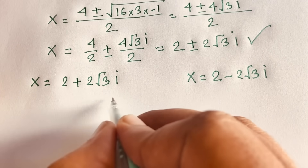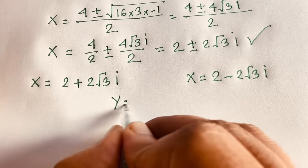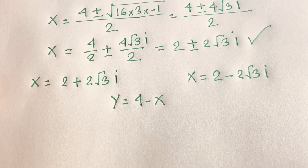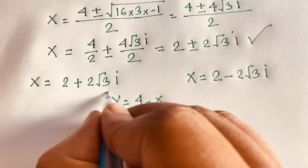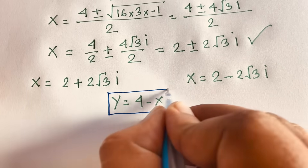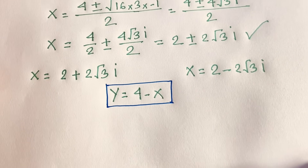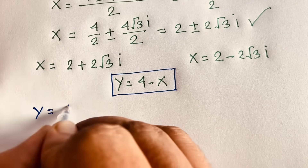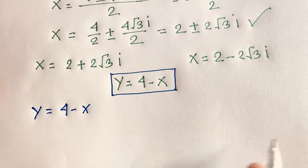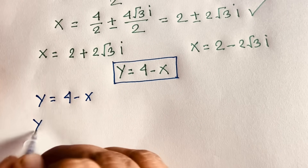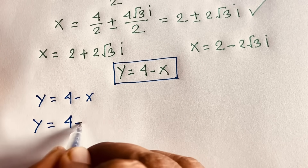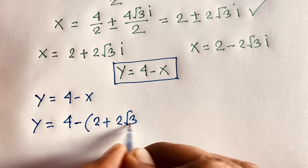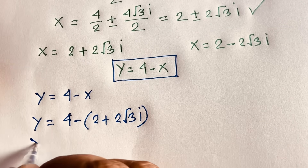Now we find the value of y. Recall our third equation: y equals 4 minus x. Substituting the first value of x equals 2 plus 2√3i, we get y equals 4 minus (2 plus 2√3i).